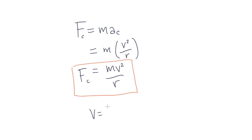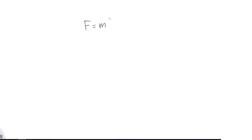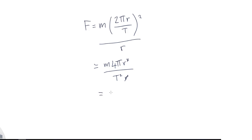Now we'll look at the equation for velocity. As we've previously discussed, this is equal to 2πr divided by big T, which is the time taken for an object to complete one period of the uniform circular motion. If we substitute in this value of velocity, we get that the centripetal force is equal to 4π²mr divided by T squared, where m is the mass, r is the radius, and T is the period.